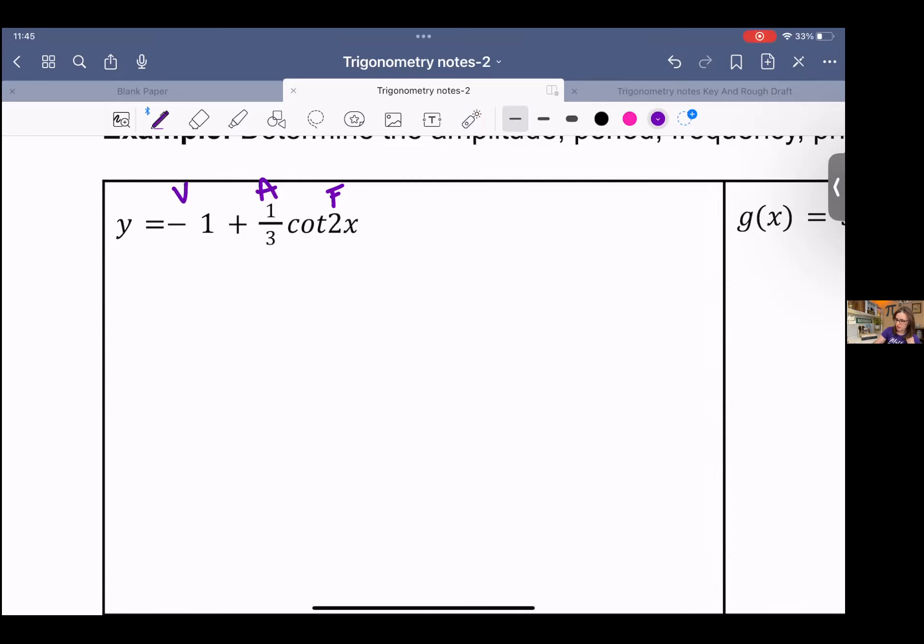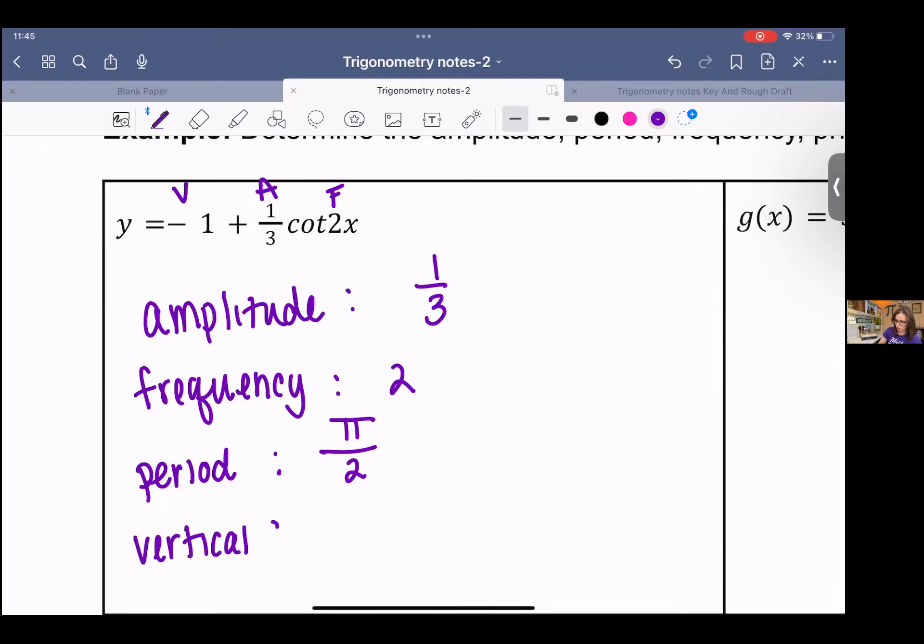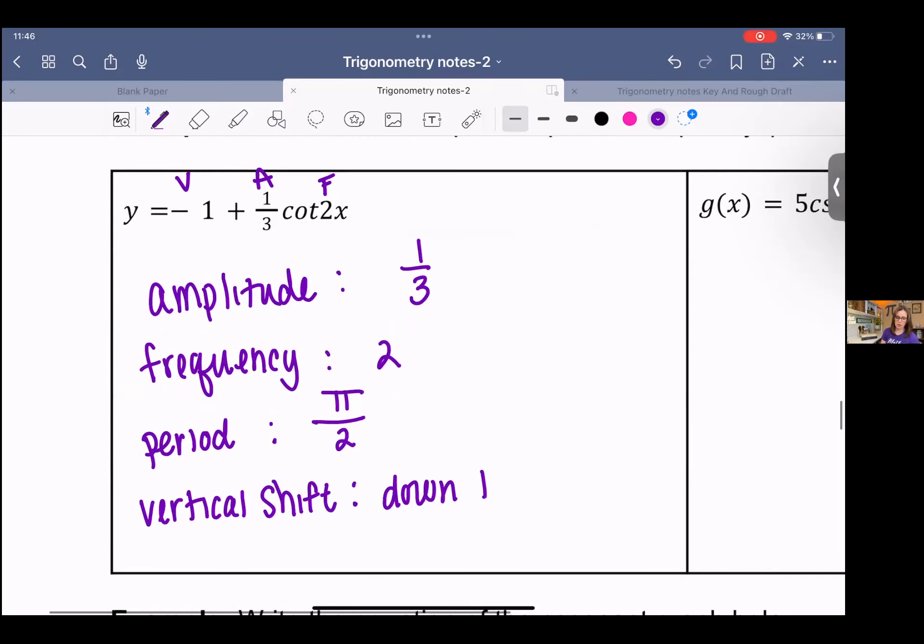So this has an amplitude of one third, a frequency of two. And then I'm going to just go ahead and state the period is pi over the frequency. And then there's no horizontal shift. The vertical shift is down one. Did I get everything? Amplitude, period, frequency, phase shift, vertical shift. So I think I got everything.